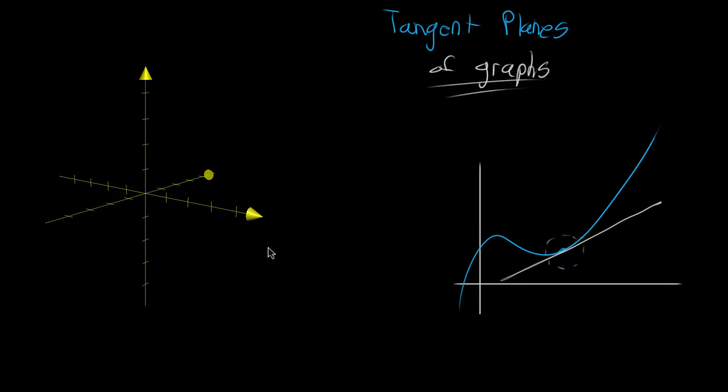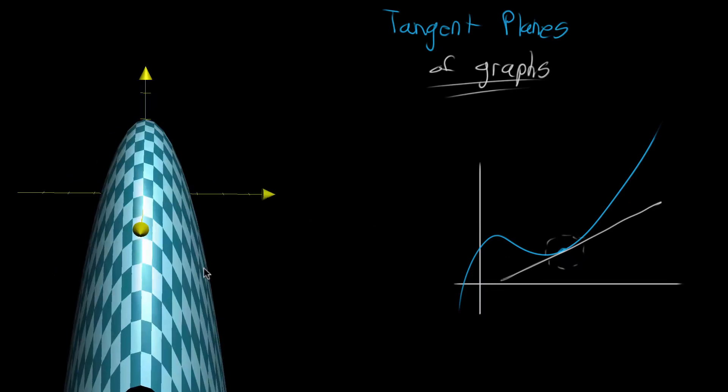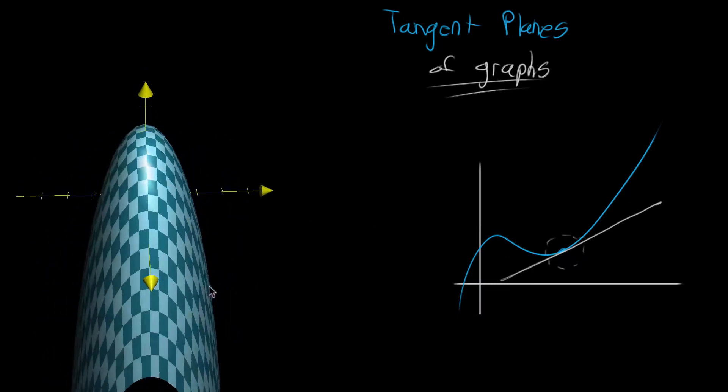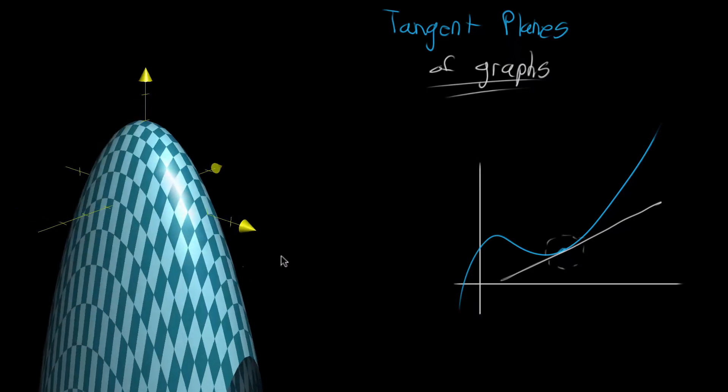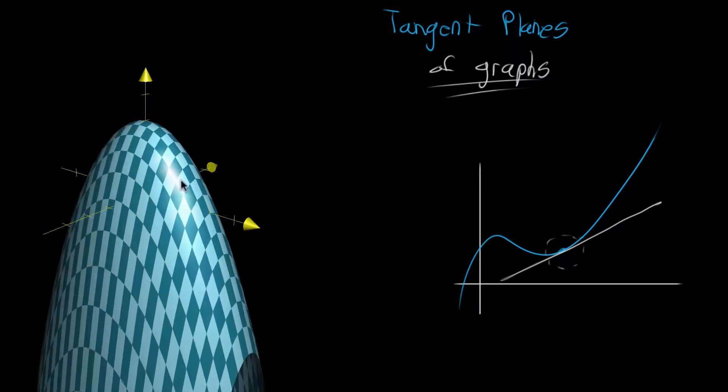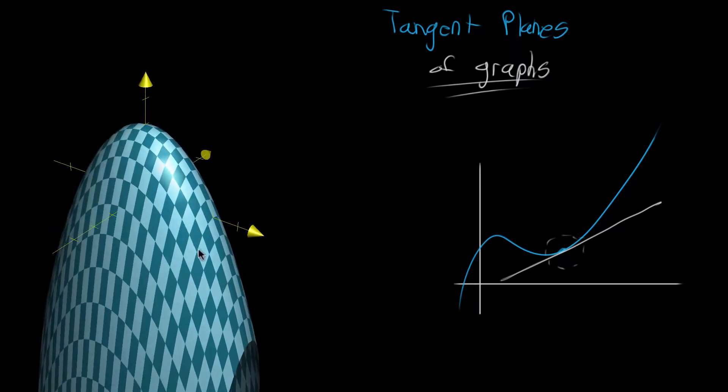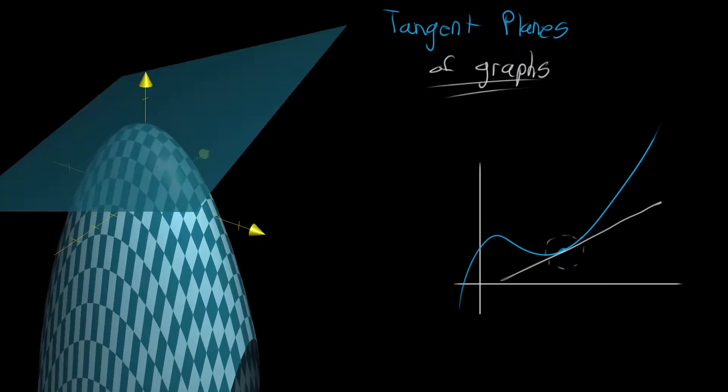And in the multivariable world it's actually pretty similar. In terms of geometric intuition it's almost identical. You'll have some kind of graph of a function like the one that I have here and then instead of having a tangent line because the line is a very one dimensional thing and here it's a very two dimensional surface, instead you'll have some kind of tangent plane.